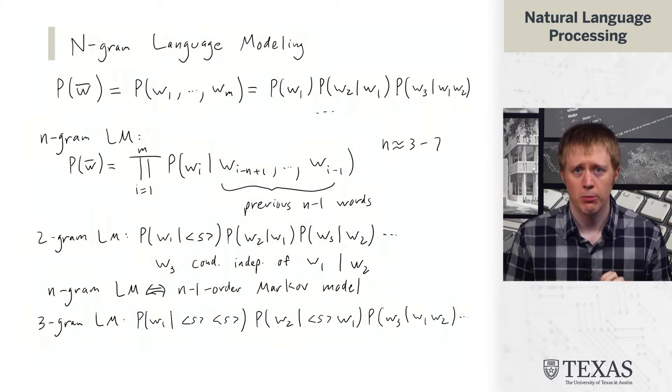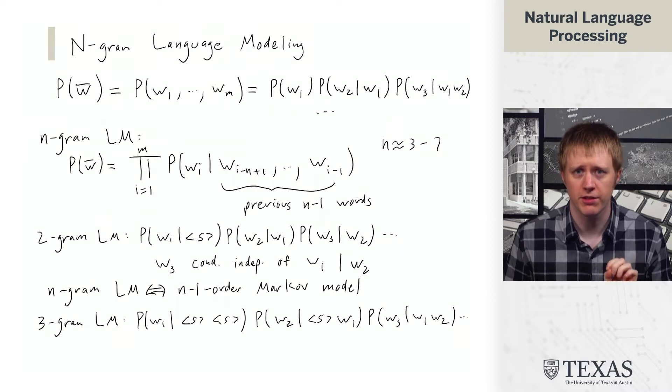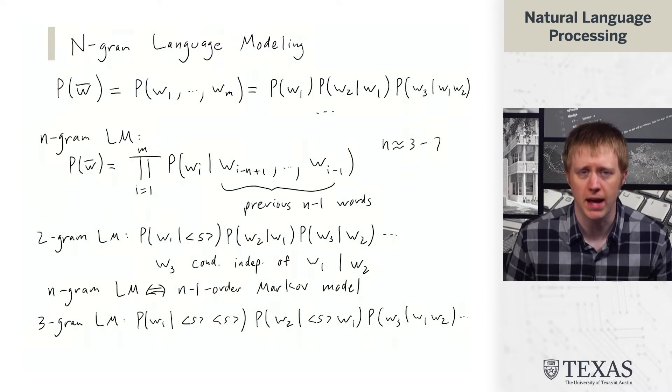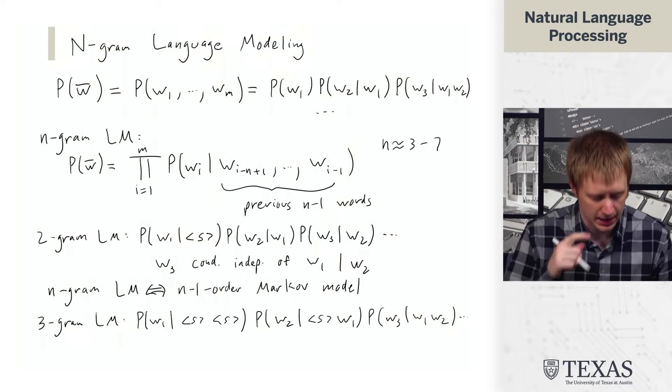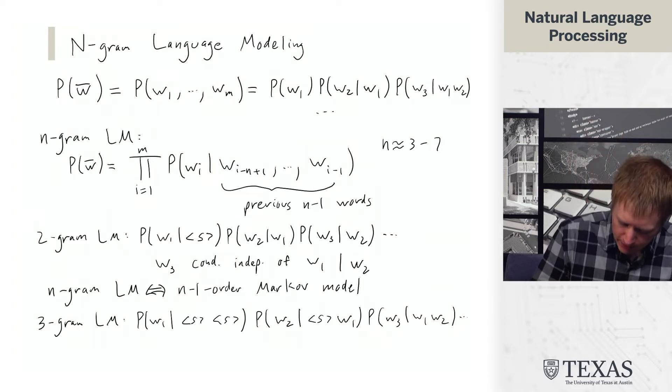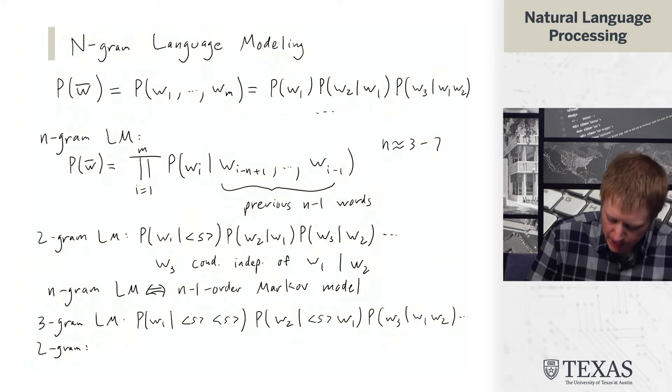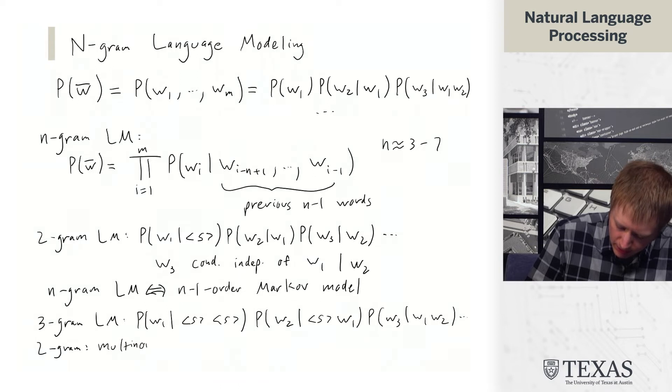However, what it does is it can allow us to model this in a fairly simple way and dramatically reduce the number of parameters that we need. So the typical way that we do this, I'm just going to take the case of a 2-gram model, is we use multinomial distributions.